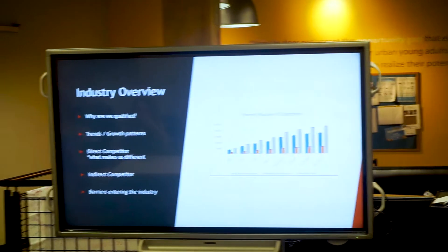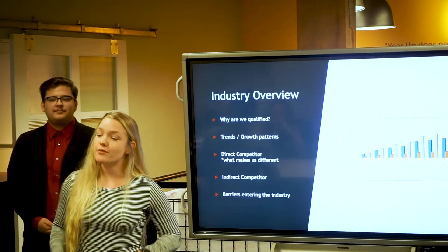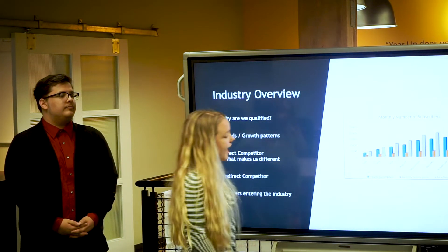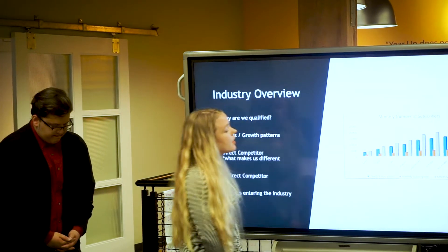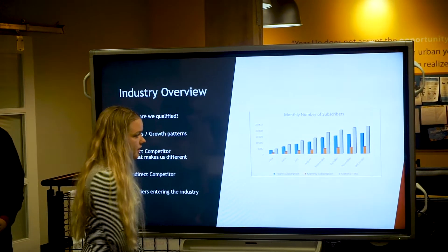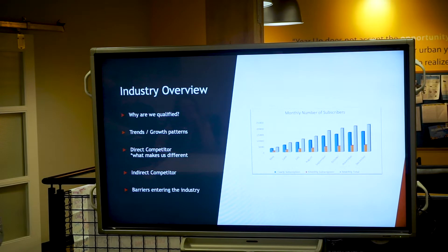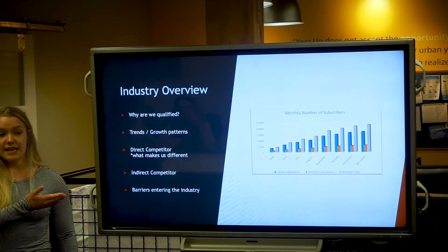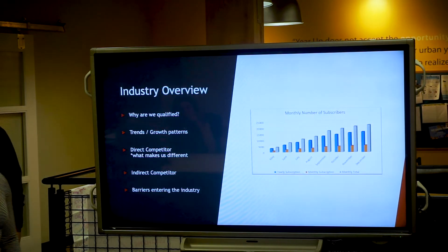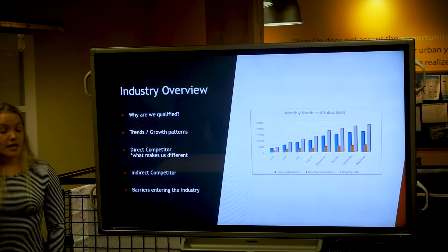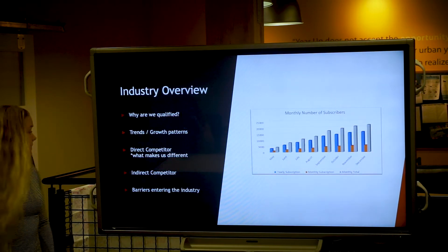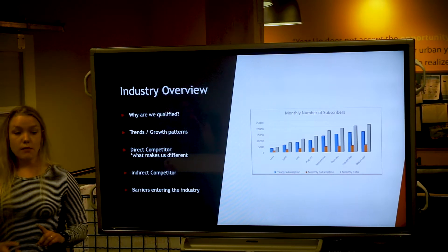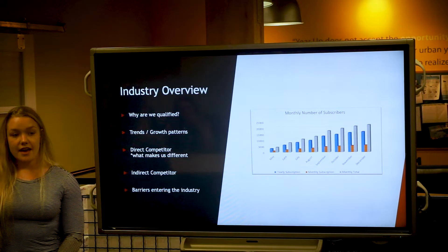My team and I are more than capable of making this business successful because we have previous knowledge in project management as well as quality assurance. As you can see here, this is the monthly number of subscribers from May through December — blue represents new subscriptions, orange represents monthly subscriptions, and gray is the monthly total, and it is rising exponentially. A direct competitor we face is an app called Stylebook, where you can virtually take pictures of your current clothing and upload them to pick outfits. What makes us different is that our app draws inspiration from past trends and brings them to life. An indirect competitor is current stylists. Some barriers to entering this industry are marketing, sponsoring, and building a customer service team, and that's why we are here today.